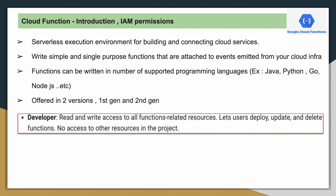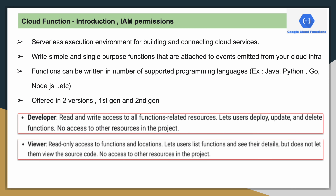To work with Cloud Functions, there are IAM roles to consider. The minimum role is the developer role, which has read and write access to all functions and related resources, and lets the user deploy, update, and delete functions. There is also a viewer role, which is a read-only role where you can see all the details about Cloud Functions.